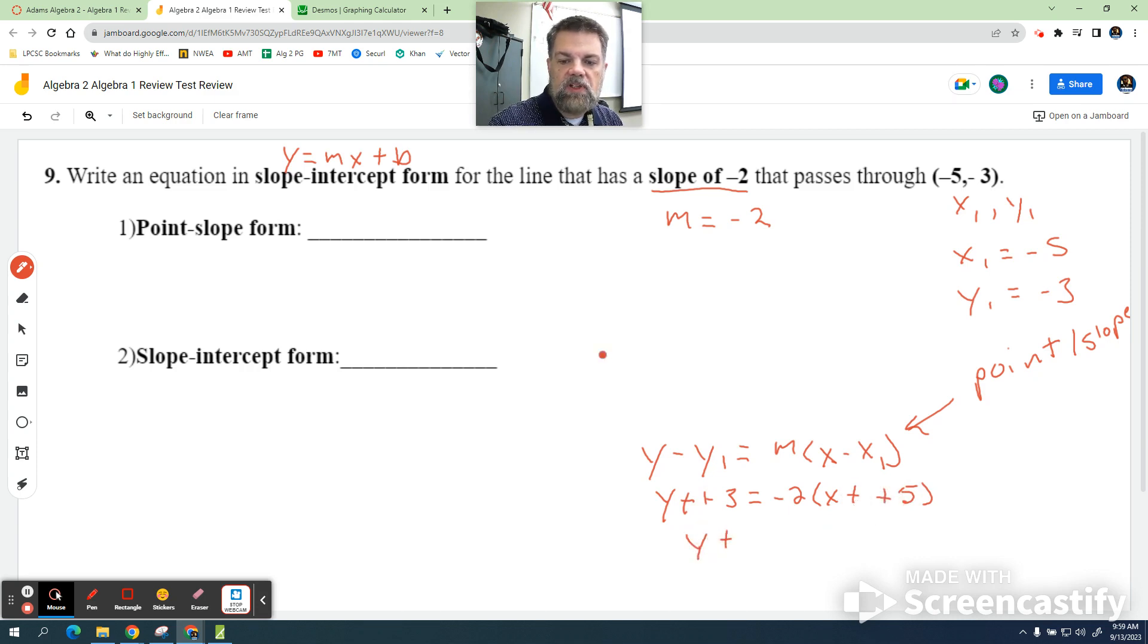So this really becomes y plus 3 equals negative 2 in parentheses x plus 5. Now, I'm just going to rewrite that up here. This is technically the simplified version of the point-slope form. If you were to write it like this, I would be okay with that answer too. I'm okay either way. So I would say negative 2 times the quantity x plus 5.